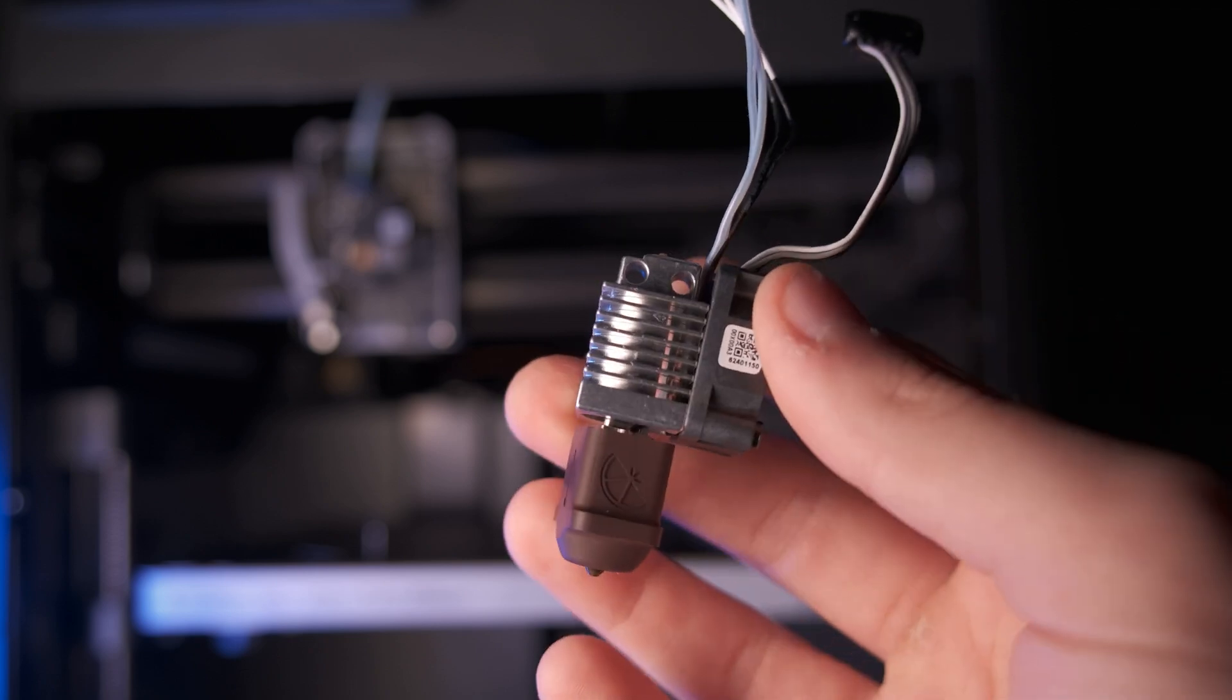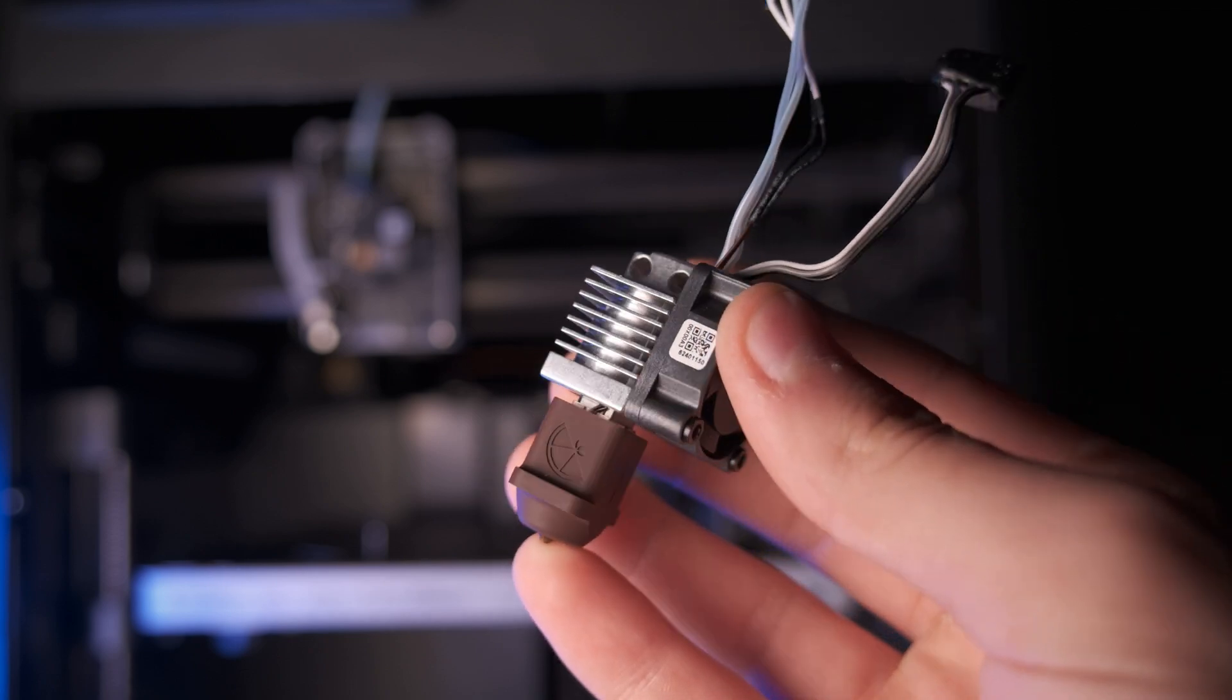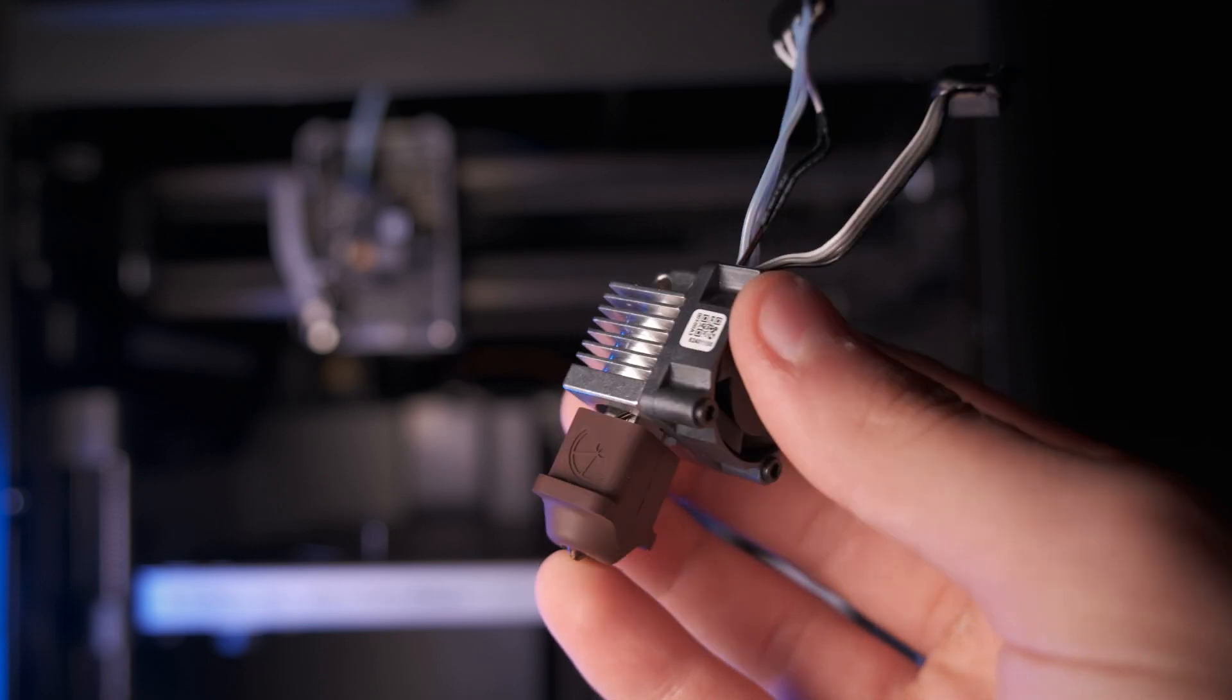Before we begin, there are a few tools that we're going to need. First, the Mako for Bamboo Lab hotend, which comes pre-assembled for your printer, where you can choose to swap your current electronics over to Mako if you choose to go that route.